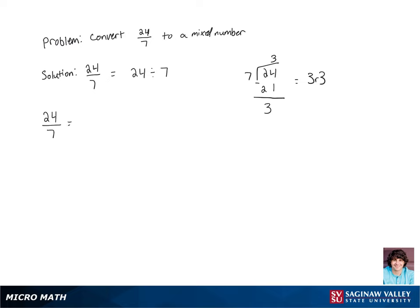Now to rewrite this as a mixed number, we're going to say 24 sevenths is equal to our quotient, which is 3, and our remainder over our divisor. So our final answer is 3 and 3 sevenths.